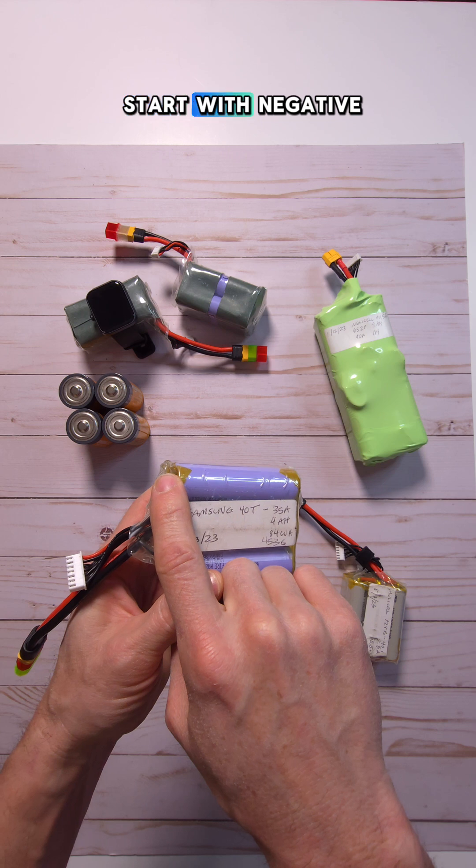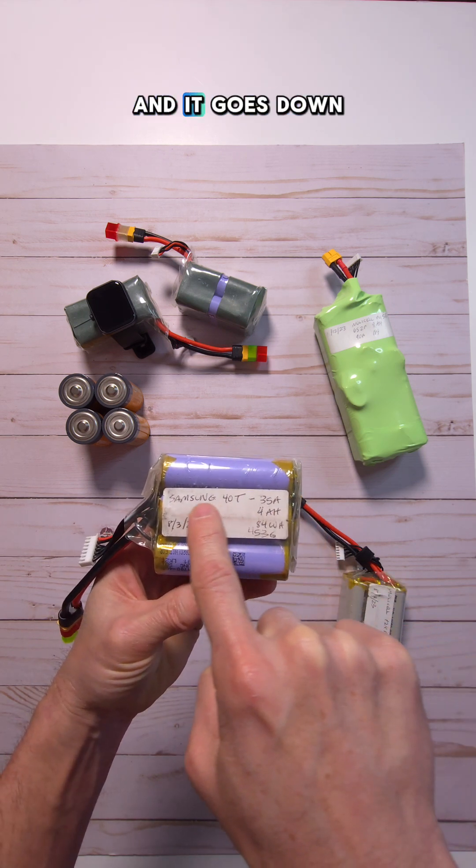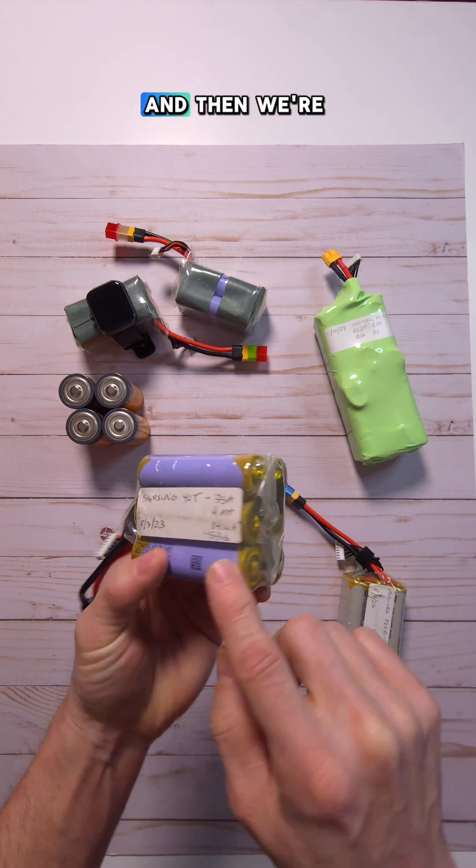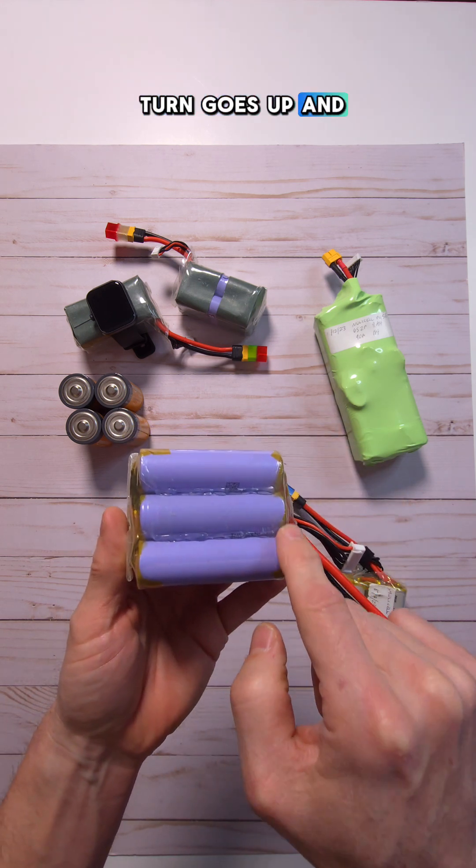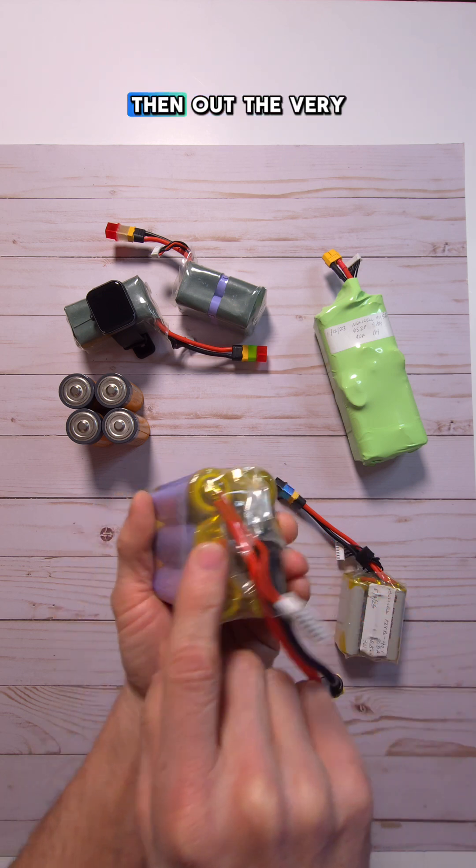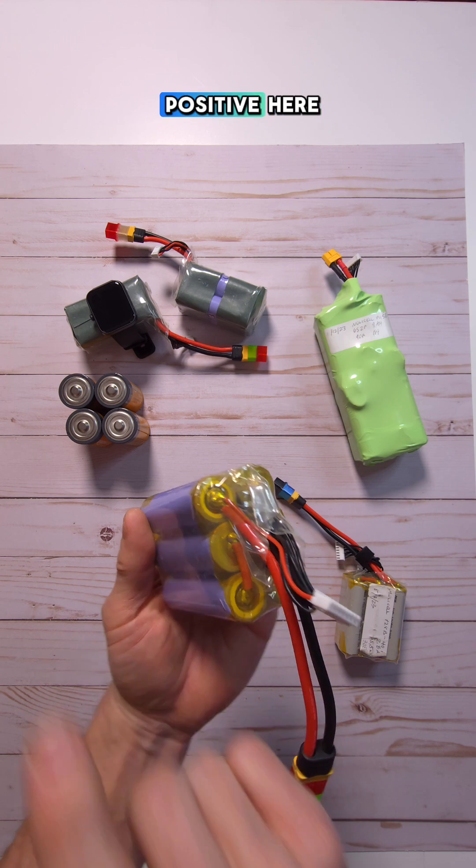So we're going to start with negative to positive. And we're just going to make this little S curve. And that's going to connect to the next one. And then it goes down and back around. And then we're going to jump to the other side. And then that in turn goes up and then here back around and then out the very top to the positive side here. So we went from the negative all the way back out to the positive.